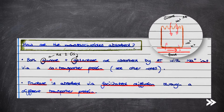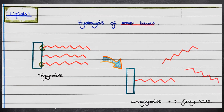Glucose and galactose — the two monosaccharides beginning with the letter G — are absorbed by active transport with sodium ions via a co-transporter protein. For the video on co-transport in the ileum, follow the link top right. Fructose, on the other hand, is absorbed via facilitated diffusion through a different transporter protein.